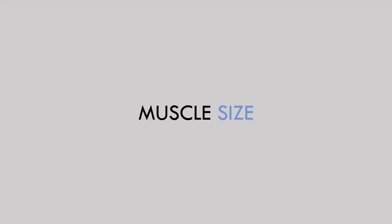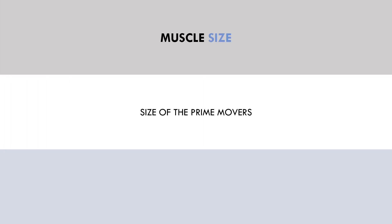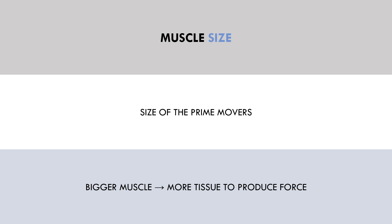The second adaptation that contributes to the expression of strength is muscle size. A bigger muscle means there is more tissue to contribute to force production, so a bigger muscle has more potential to be strong because the nervous system has more tissue to become efficient with.